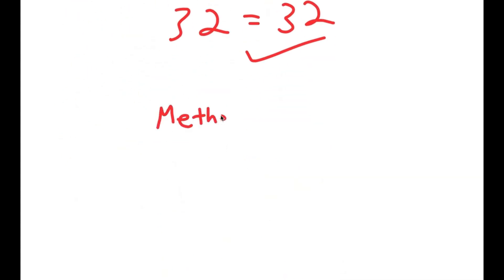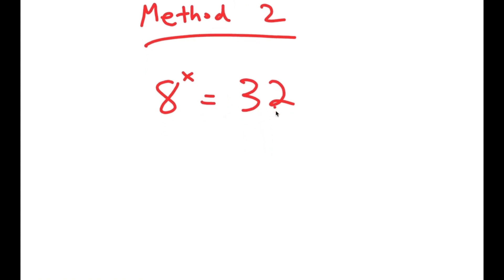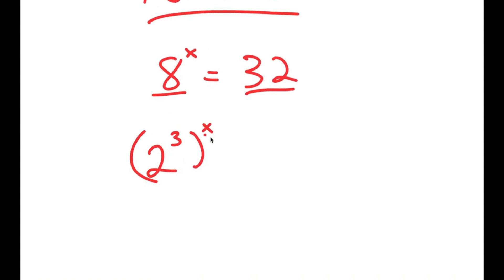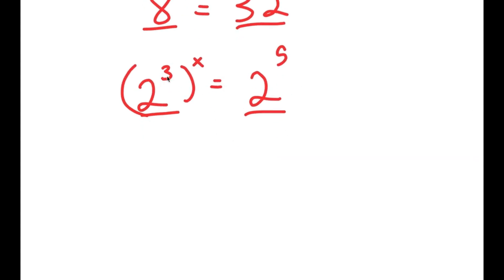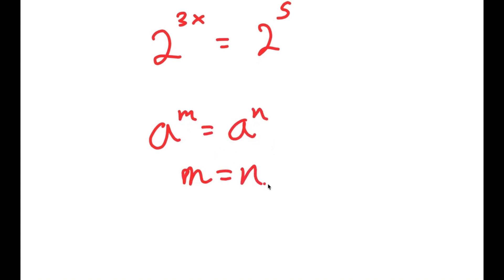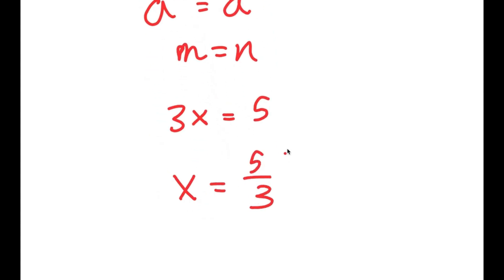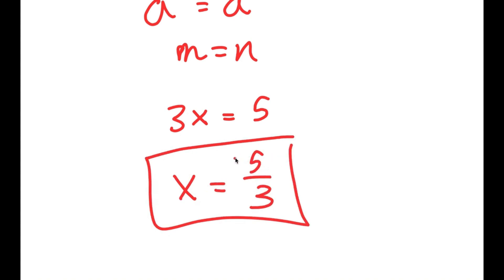I also have a second method of solving this problem. We have the same equation: 8 to the power of x is equal to 32, and this is a simpler method. I'm going to rewrite these two numbers: 8 as 2 to the power of 3, and 32 as 2 to the power of 5, giving both the same base. So 2 to the power of 3x is equal to 2 to the power of 5. Because the bases are the same, 3x is equal to 5, giving x equals 5 over 3.